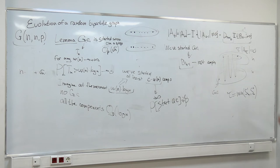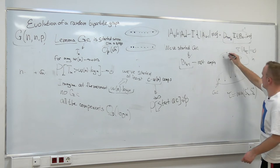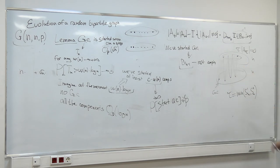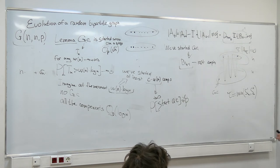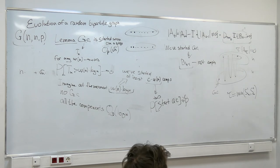The point is that the traversal of the bipartite random graph is almost exactly the same as two independent traversals of two G(N,P)'s — two regular random graphs. So your idea is: you define some process on the random graph, but you ensure properties so it can be considered as two independent processes.